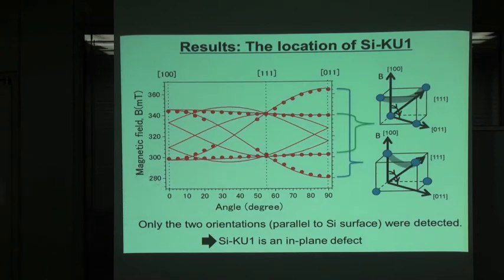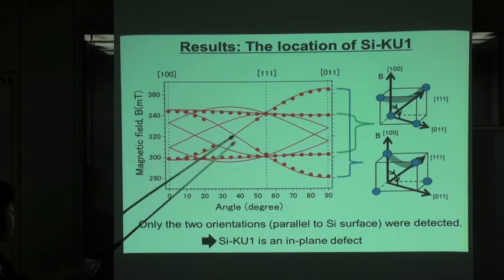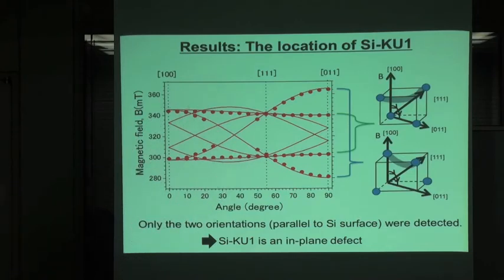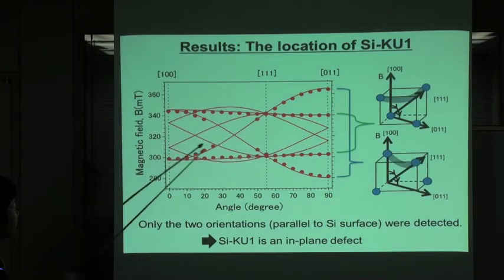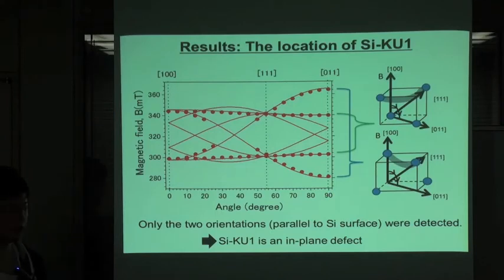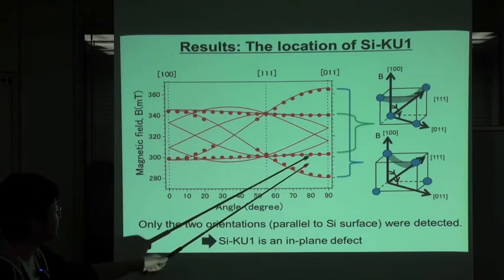This is a figure of the angular dependence of KU1. This experimental result also gives information about the structure of the defect. Red dot is the resonance point of KU1, and red solid curve is the calculated value of the KU1 signal. If the KU1 signal exists at the backside, all these solid lines should be detected.